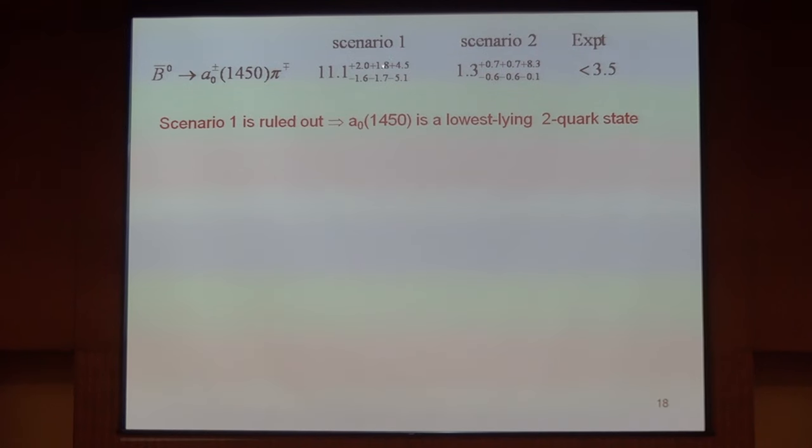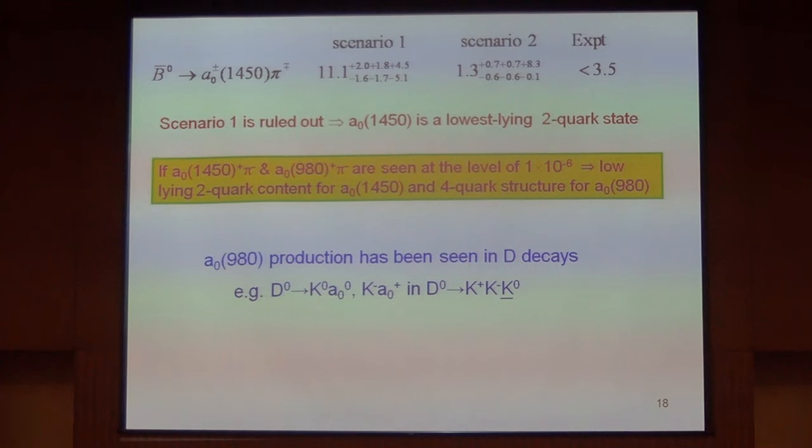We can see scenario one and scenario two for a₀(1450), and again scenario one is disfavored. So it's indicated that a₀(1450) is most likely not a four-quark bound state.